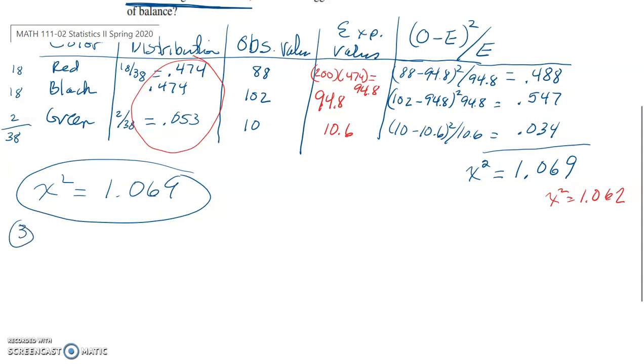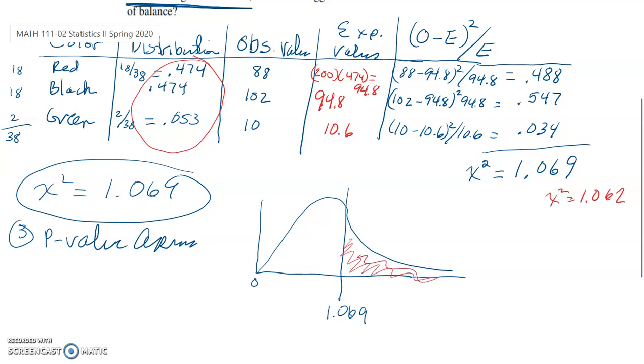So, to continue this problem, we now know we have our chi-square test statistic equals 1.069. So, moving on to part three, we have to make a determination to reject or not reject. To do that, I'm going to use a p-value approach. So, I'm going to draw my chart. Here's a simple chi-square. Remember, they're right-skewed, starting at 0. And 1.069 is going to be fairly over here. Remember, when we do the p-value approach, we put our test statistic on the chart, and this area here represents our p-value.